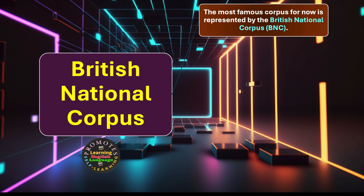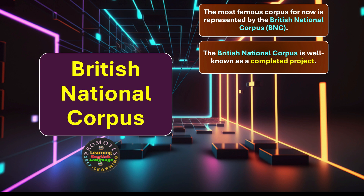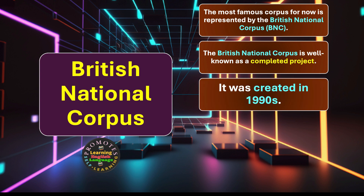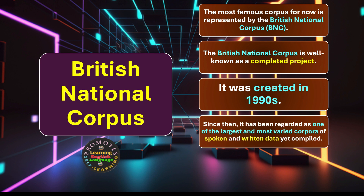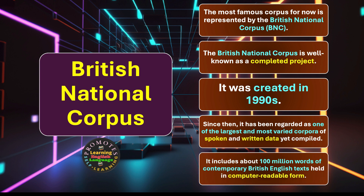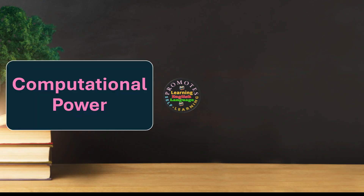The British National Corpus, known as the BNC, is the most famous corpus. It was created in the 1990s and is regarded as one of the largest and most varied corpora of spoken and written data ever compiled. It includes about 100 million words of contemporary British English in computer-readable form.